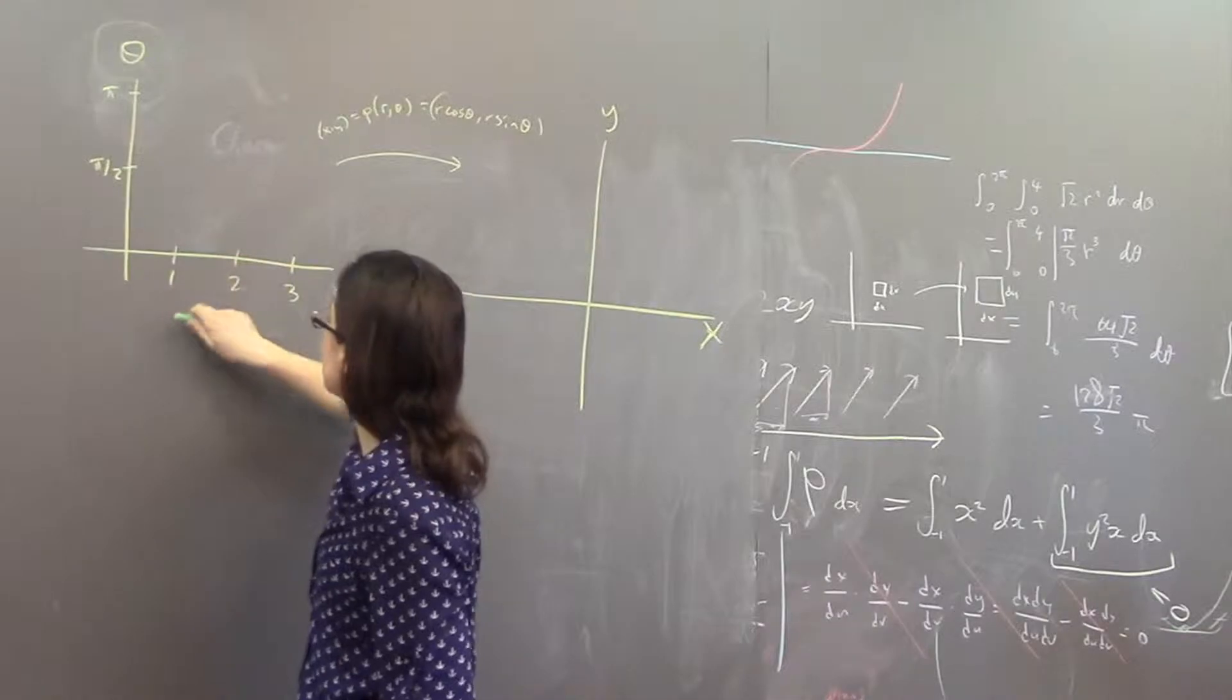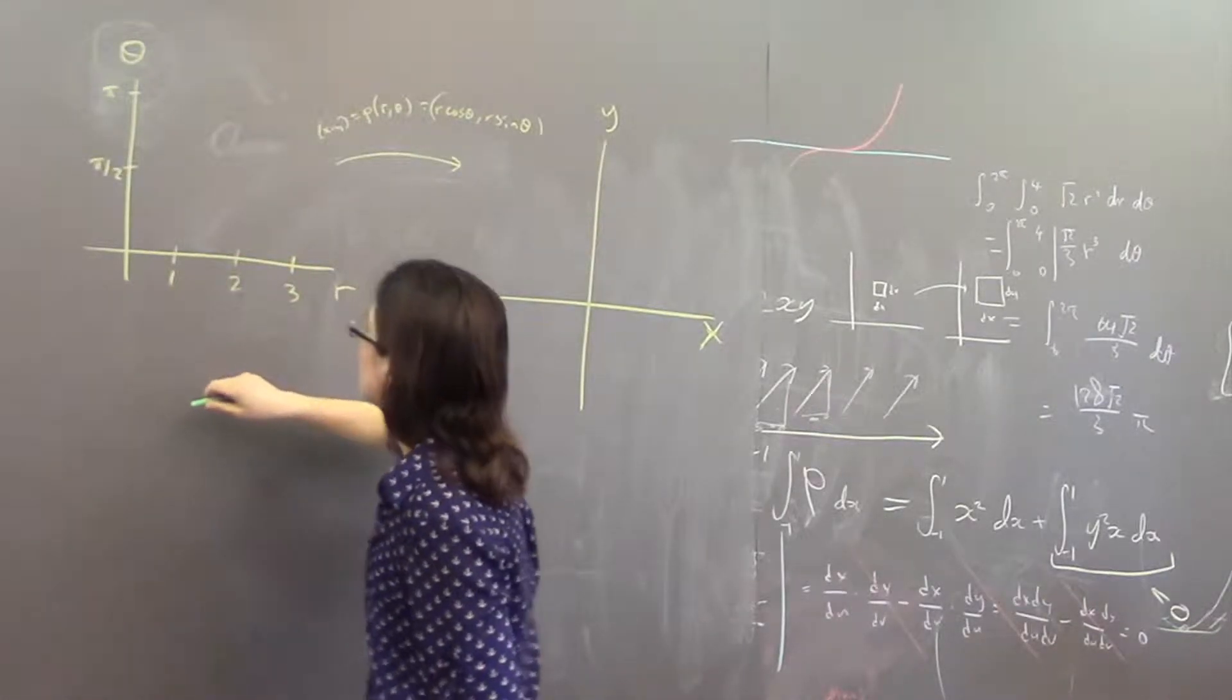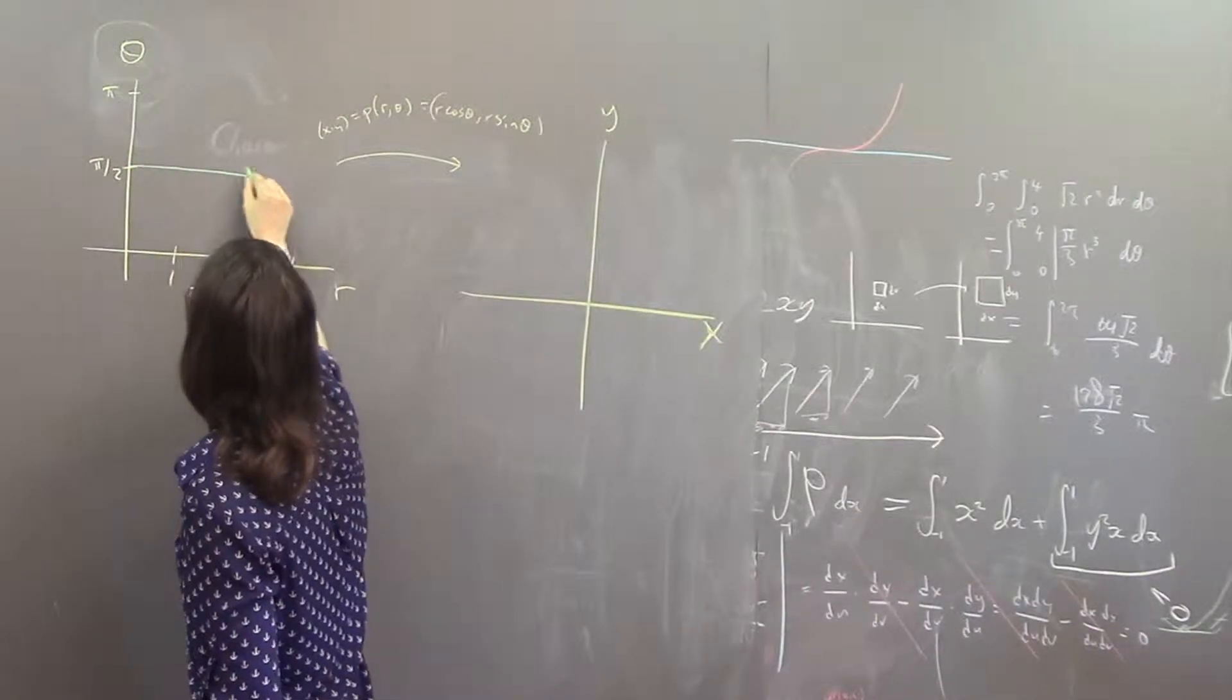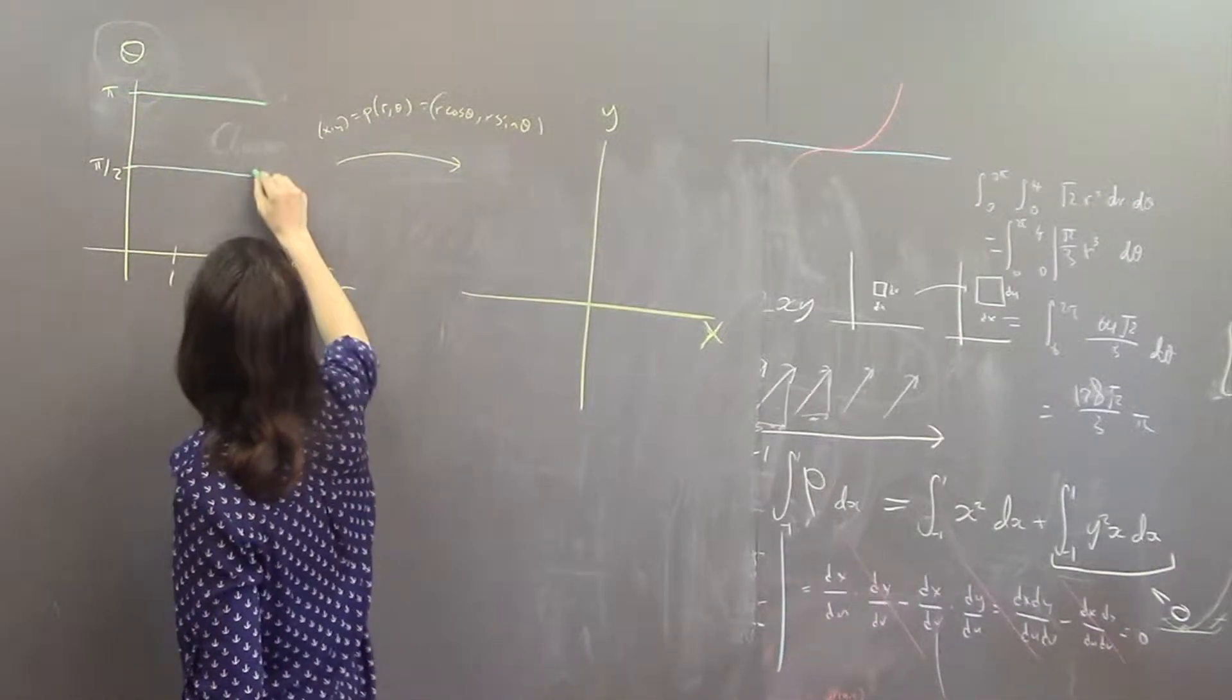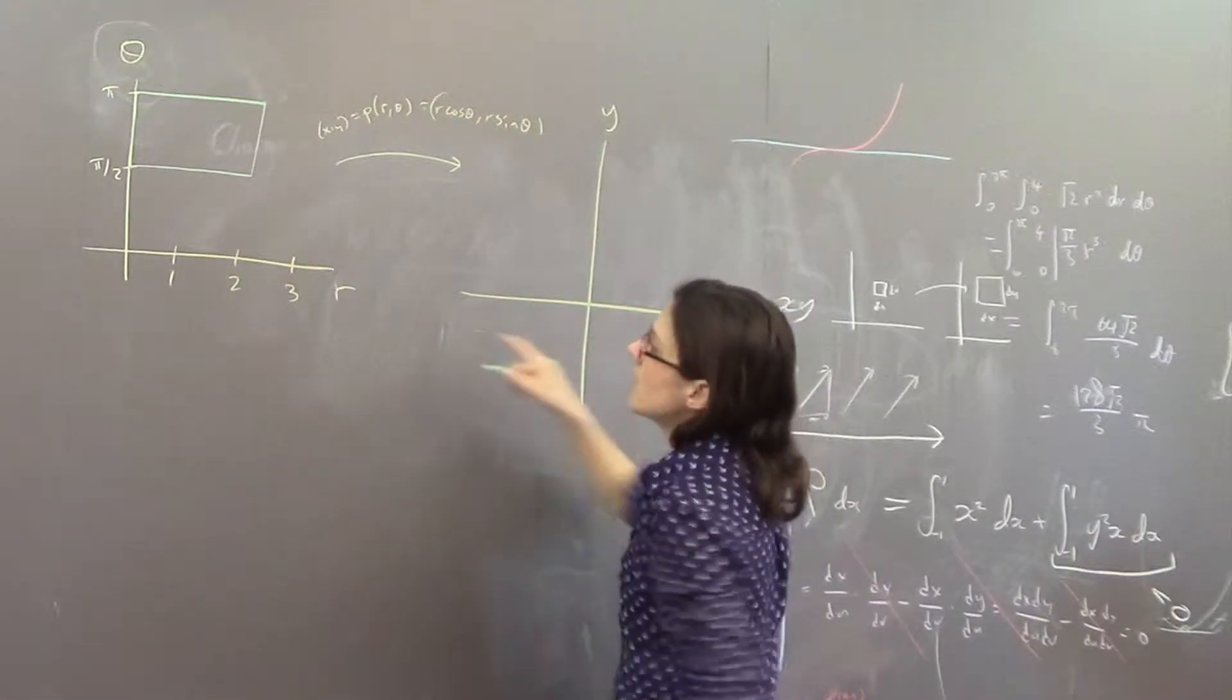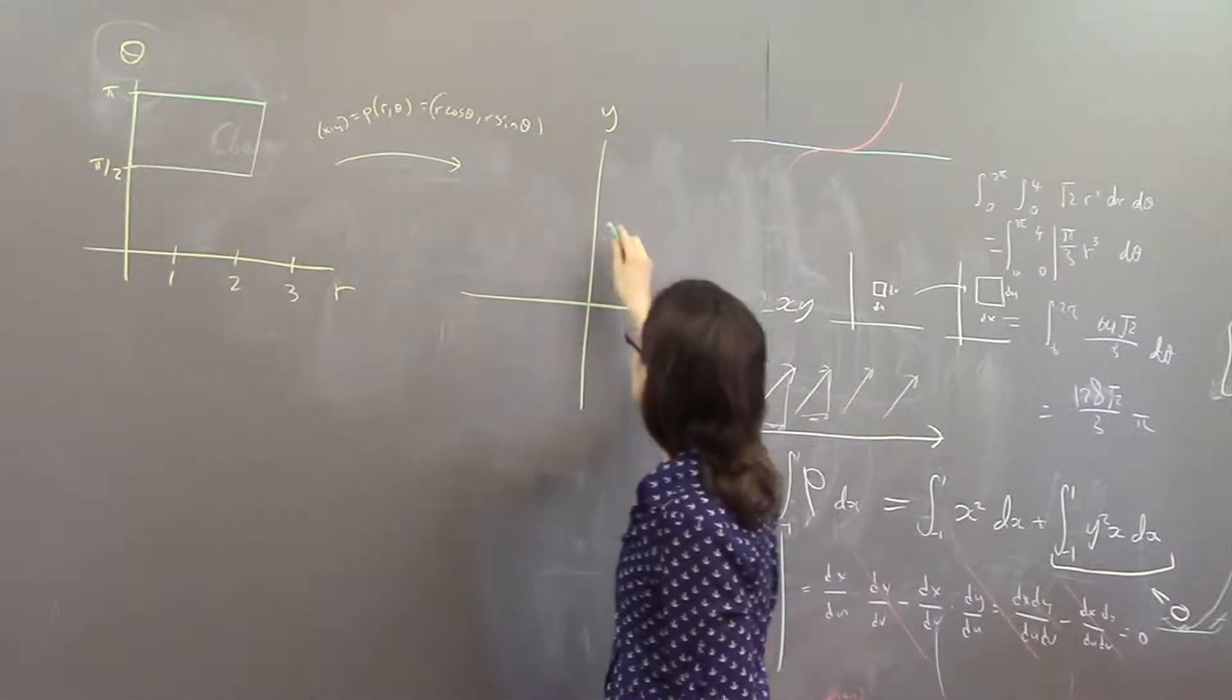We usually use a rectangle, let's say from zero to two, from pi over 2 to pi or something like that. So r is going from zero to two and theta is going from pi over 2 to pi.